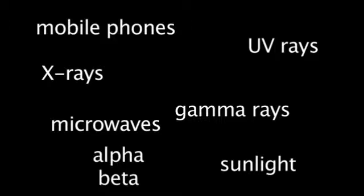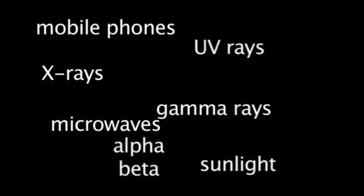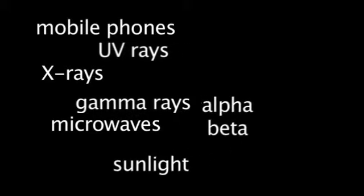But there are some important distinctions between these different types of radiation. For example, alpha and beta rays are actually tiny particles moving very fast, whereas the rest of these types of radiation are all waves, very similar to light. So let's arrange them by particles on the right and waves on the left.